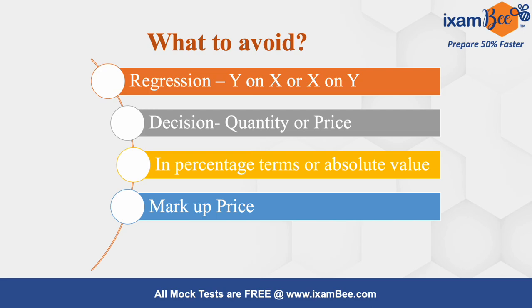Fourth is the calculation for marker price. Marker price is the excess of price over marginal cost, but it doesn't mean you obtain it by taking the simple difference of price and marginal cost. In absolute terms, marker price equals price divided by marginal cost. In percentage terms, marker price equals price minus marginal cost, divided by marginal cost, multiplied by 100. These are the formulas for calculating marker price.